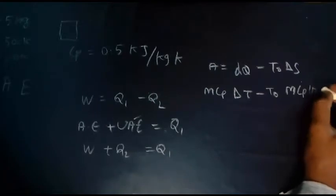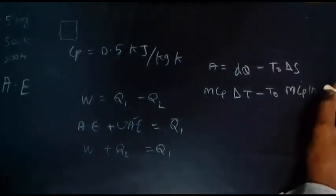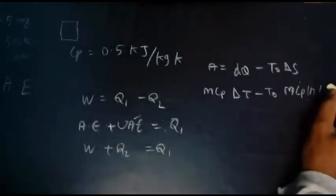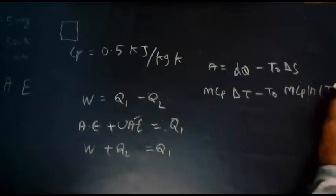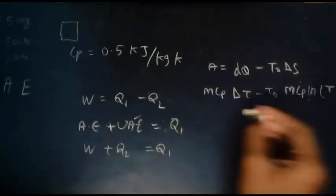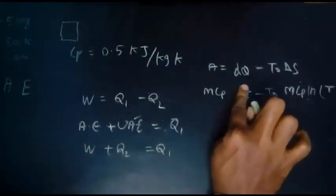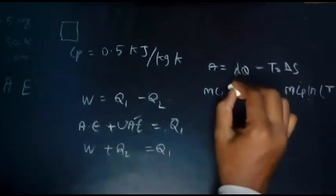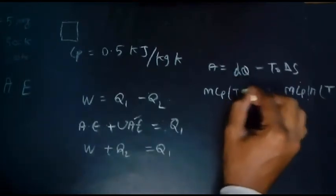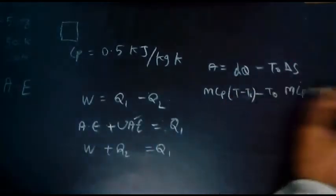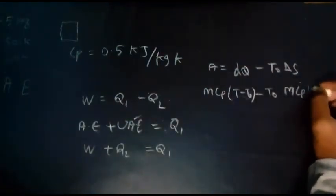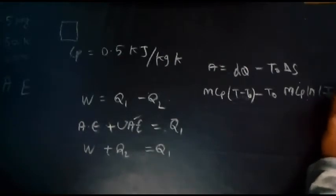ln T. Here let me write it direct: T minus T naught minus T naught into ln T divided by T naught.